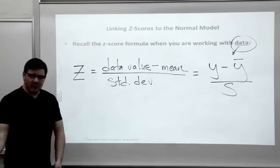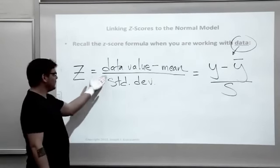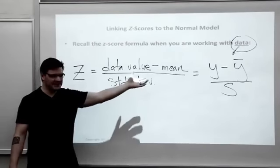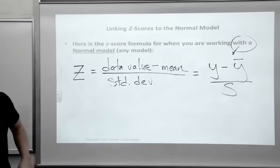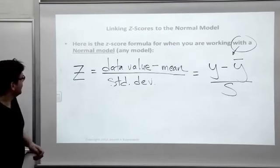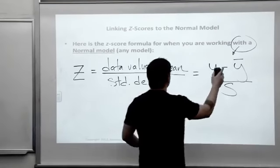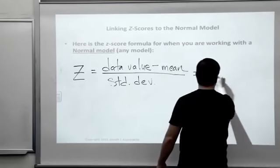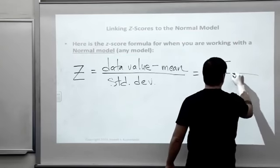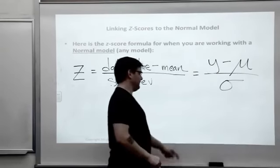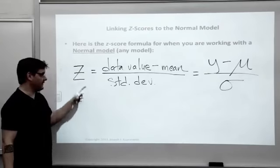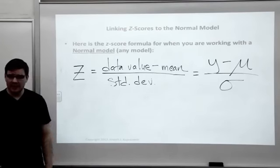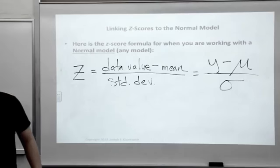Now we're doing normal models. The idea is the same. I still take my data value, still subtract the mean, still divide by the standard deviation. It's just that the symbols have changed. Here's the Z-score formula for when you are working with a normal model, or in fact any model. This is Y minus mu divided by sigma. You can rewrite it if you choose, just remember the idea is the same.